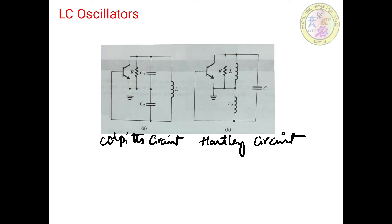Whatever resistance R is present, it models the combination of losses of inductors, as well as the load resistance of the oscillator and the output resistance of the transistors. The frequency of oscillation in these oscillators is determined by the resonance frequency of the tank circuit, where the tank circuit acts like a reservoir for energy storage.